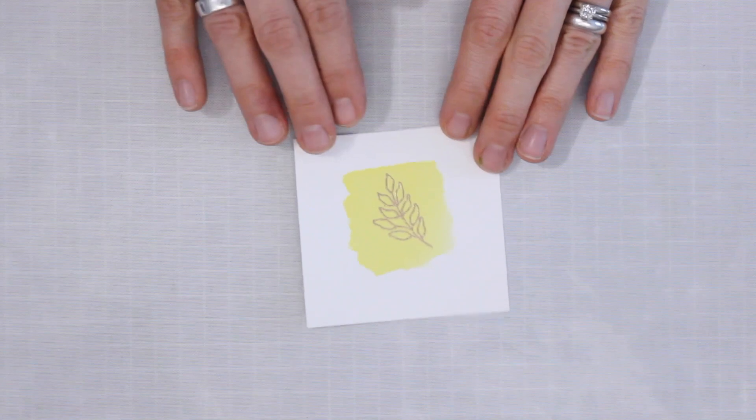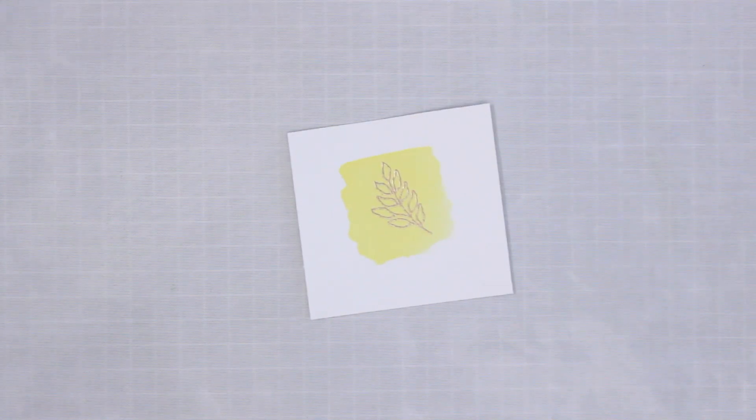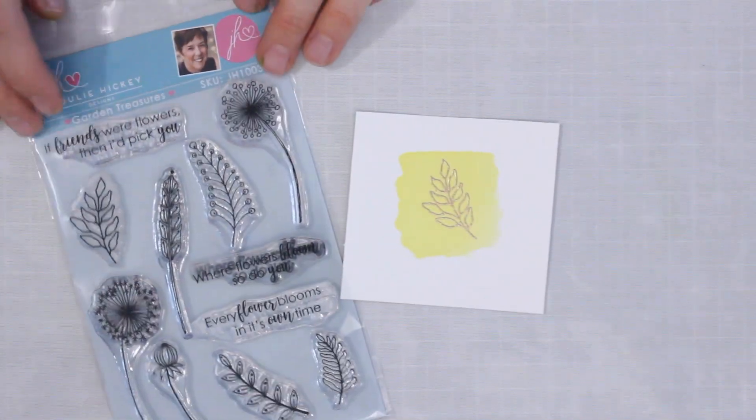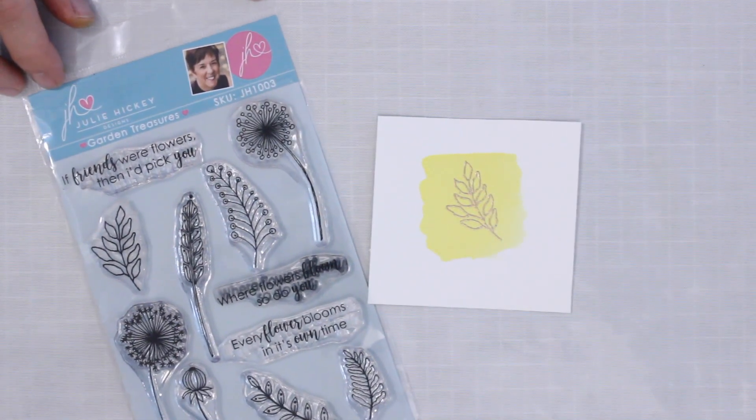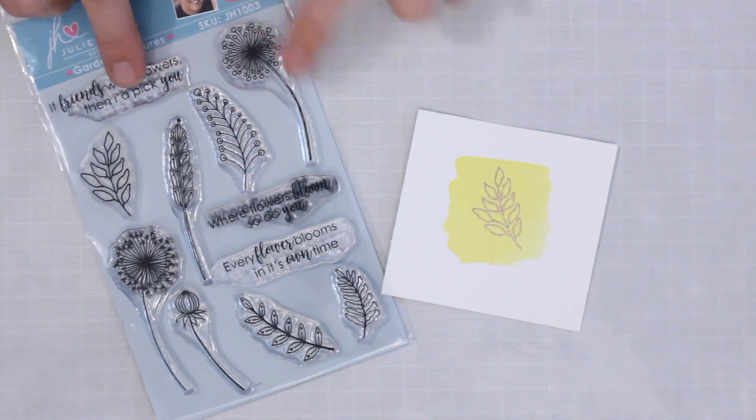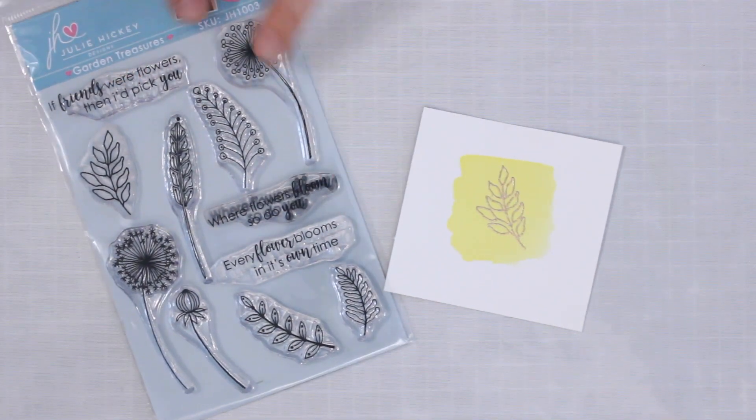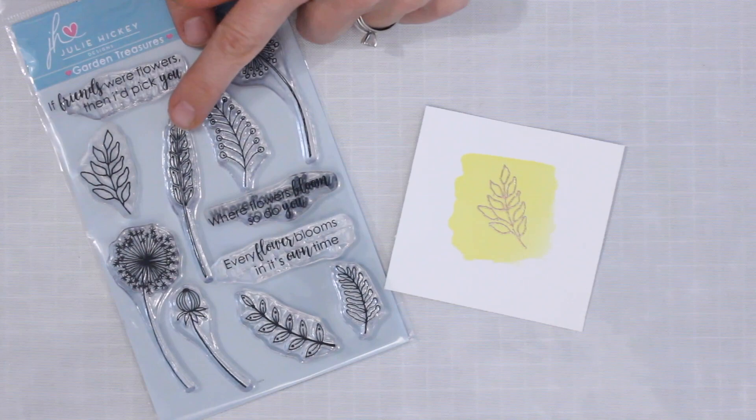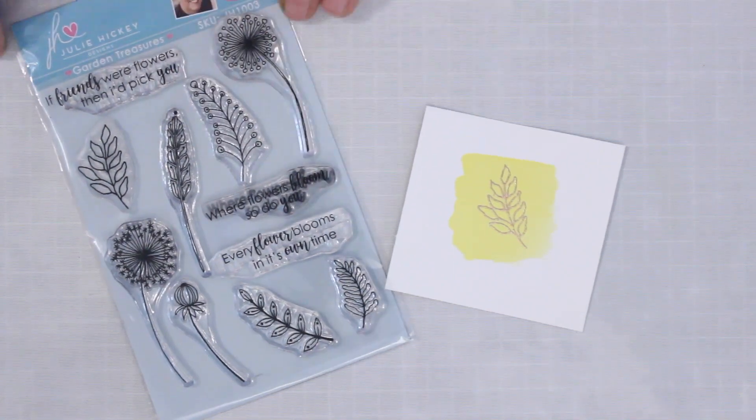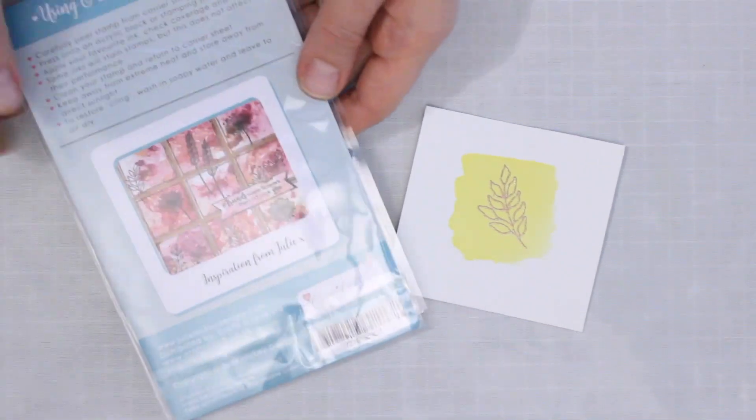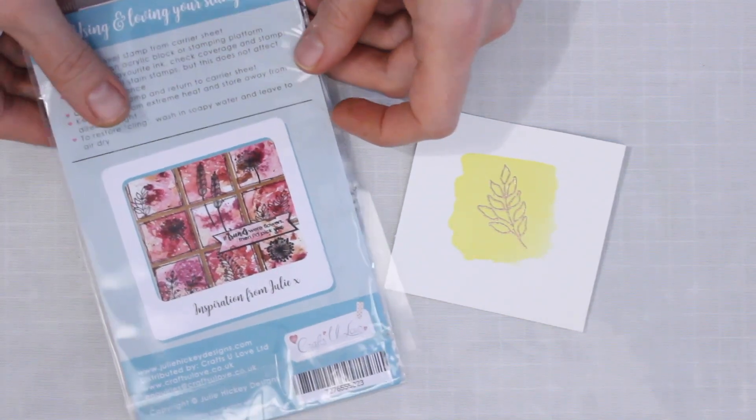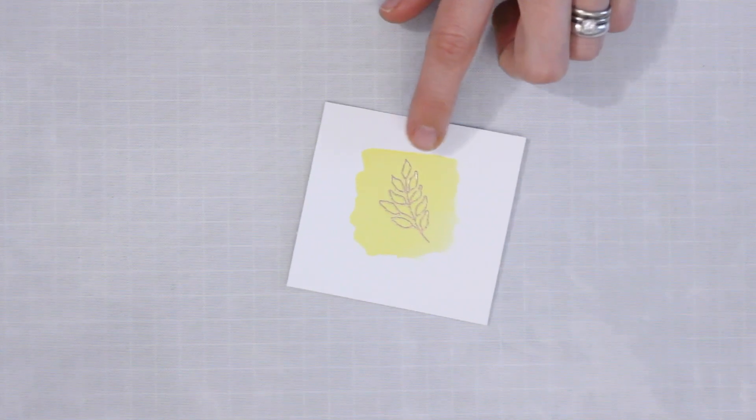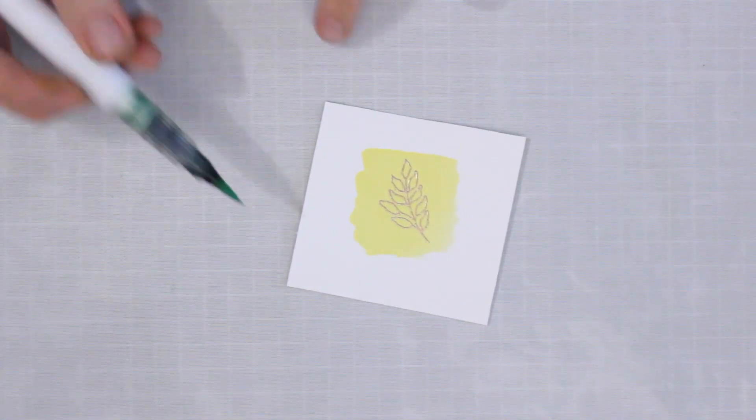And as you can see I've got one here already ready to go. Now the stamp that I'm working with is one from a set designed by my friend Julie Hickey and this is the garden treasures collection. I love this one because it's got some really nice sentiments which I also used on the card, but it has some really nice simple, very sweet botanical motifs. And of course you've always got with Julie some great inspiration on the back of the package here. So I'm just using this one very simple little leaf motif.